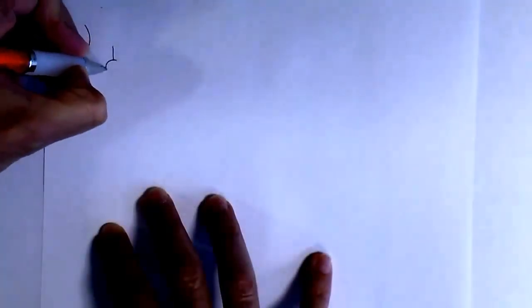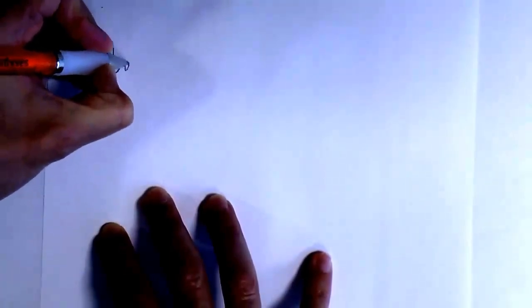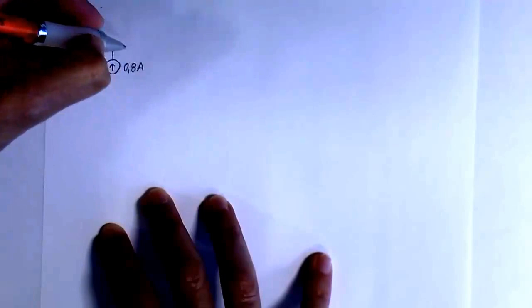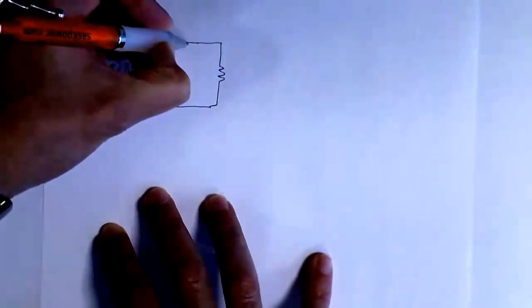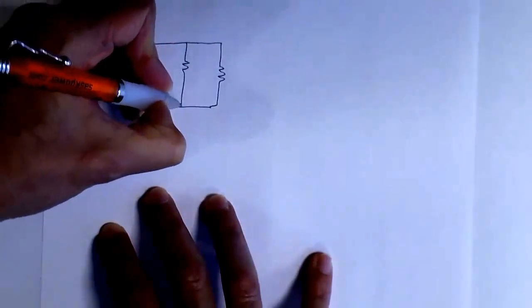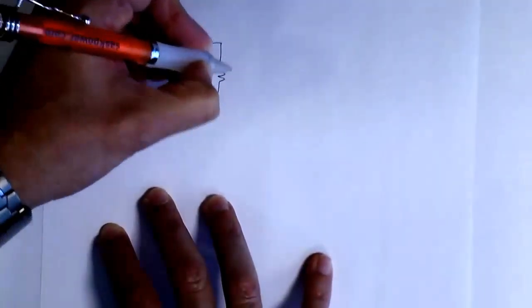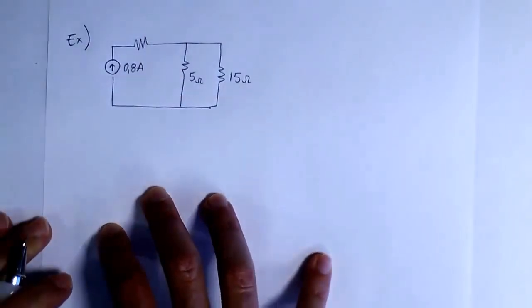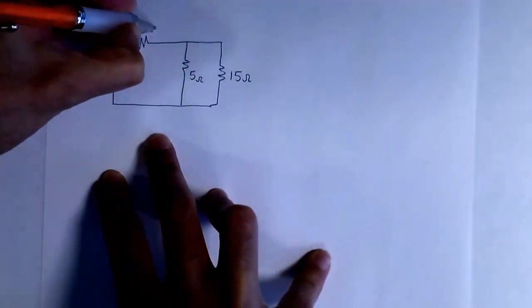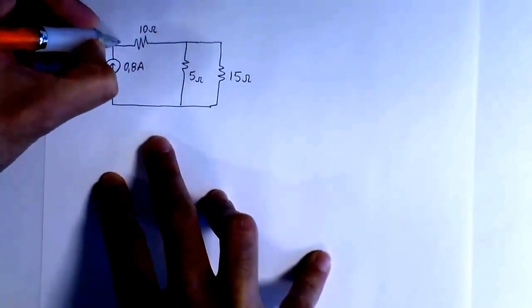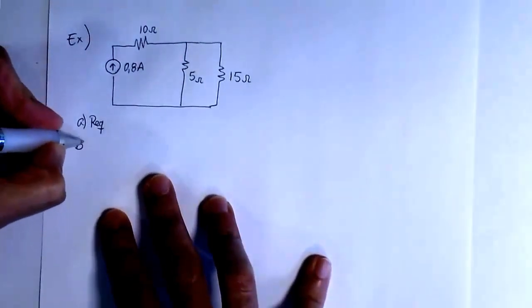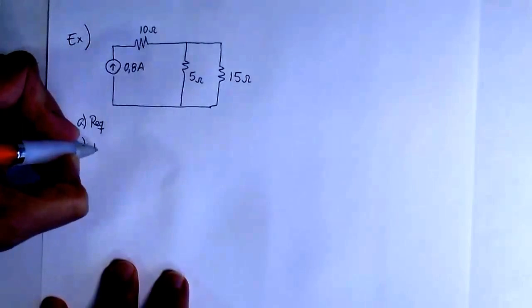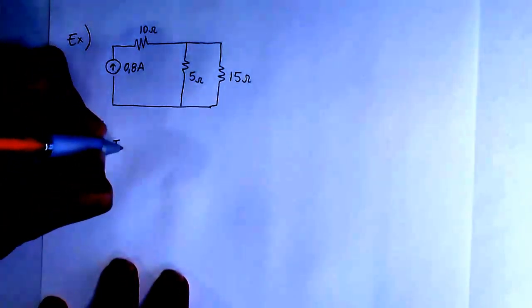Let's take a look at the first example. We have a current source providing 0.8 amps, connected to one resistor, and then we have another two resistors. This resistor is 5 ohms, this one is 15 ohms, and here we have 10 ohms.